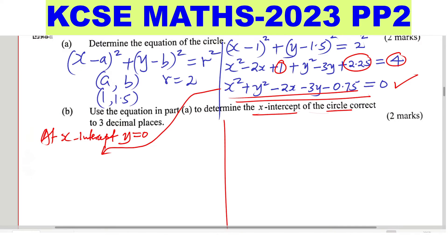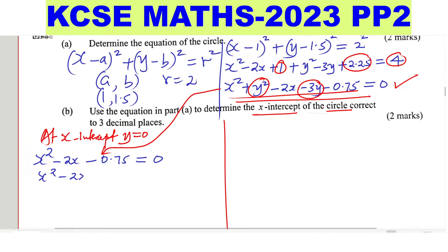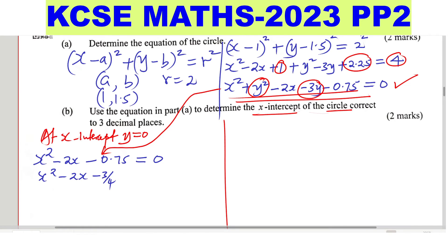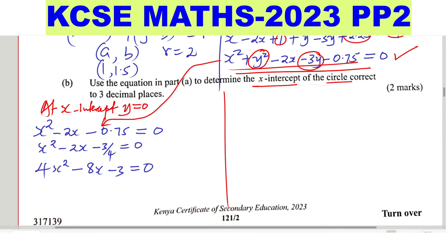Using the equation x² + y² − 2x − 3y − 0.75 = 0, substitute y = 0 wherever y appears. This gives x² − 2x − 0.75 = 0. Since 0.75 = ¾, this is x² − 2x − ¾ = 0. Multiplying each term by 4 to eliminate the fraction: 4x² − 8x − 3 = 0. Solving this quadratic equation will give the x-intercepts.